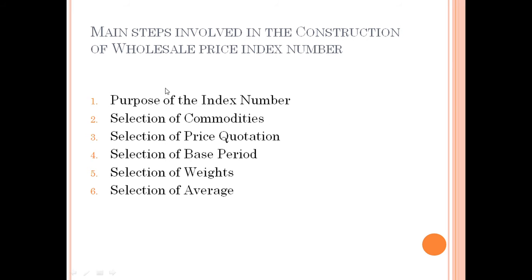The second step is selection of commodity — which commodities you are using. For example, if you are measuring the price index number for sugar, the commodity is sugar. The third step is selection of price quotation — which currency you are using. If you are in Pakistan, you will use rupees; if abroad, you will use dollars or pounds. You have to specify your price quotation for the current year.